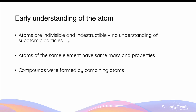Before we delve into the first model of an atom, it is important to understand our early understanding of the atom — that we thought atoms were indivisible and indestructible. There was no understanding of subatomic particles. We also knew that atoms of the same element had the same mass and chemical as well as physical properties, and that various compounds were formed by combining atoms of different elements. Our early understanding of the atom compared to what we now know today was very basic and half-correct at best.